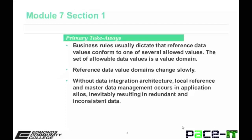Business rules usually dictate that reference data values conform to one of several allowed values. The set of allowable data values is a value domain. Reference data value domains change slowly. Without data integration architecture, local reference and master data management occurs in application silos, inevitably resulting in redundant and inconsistent data.